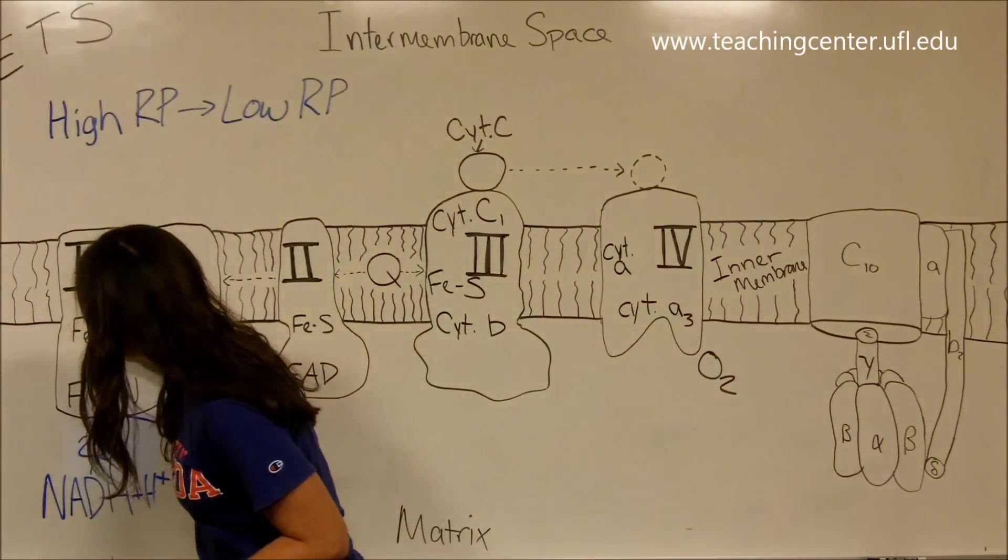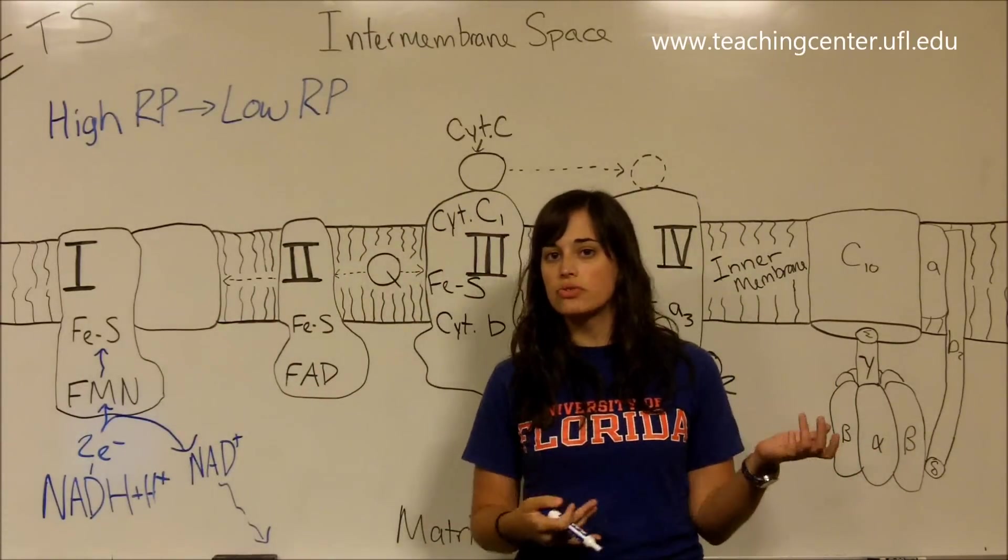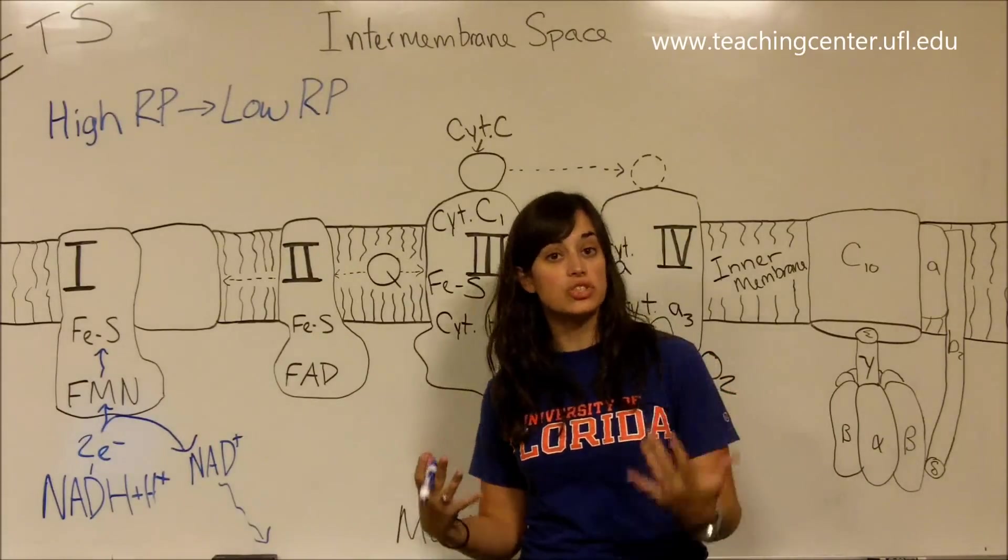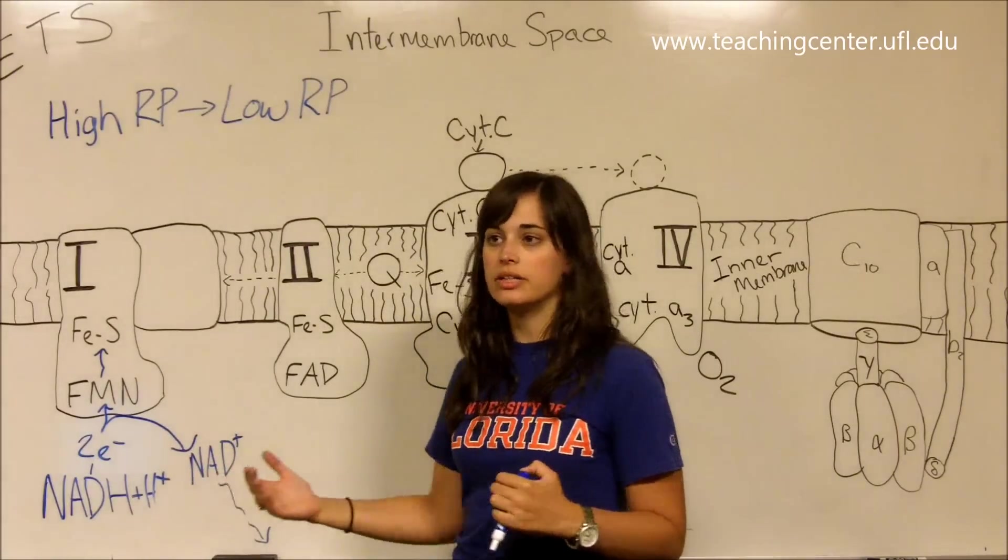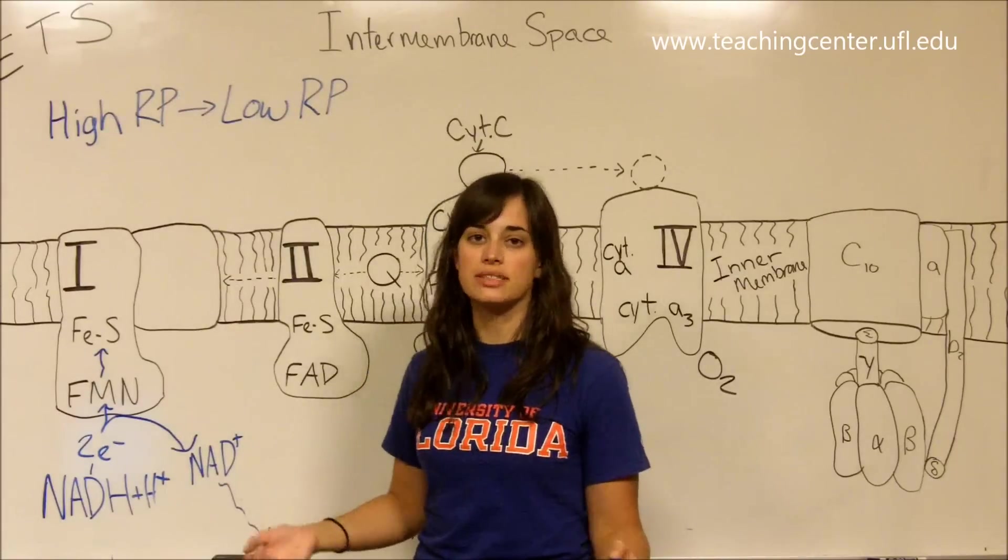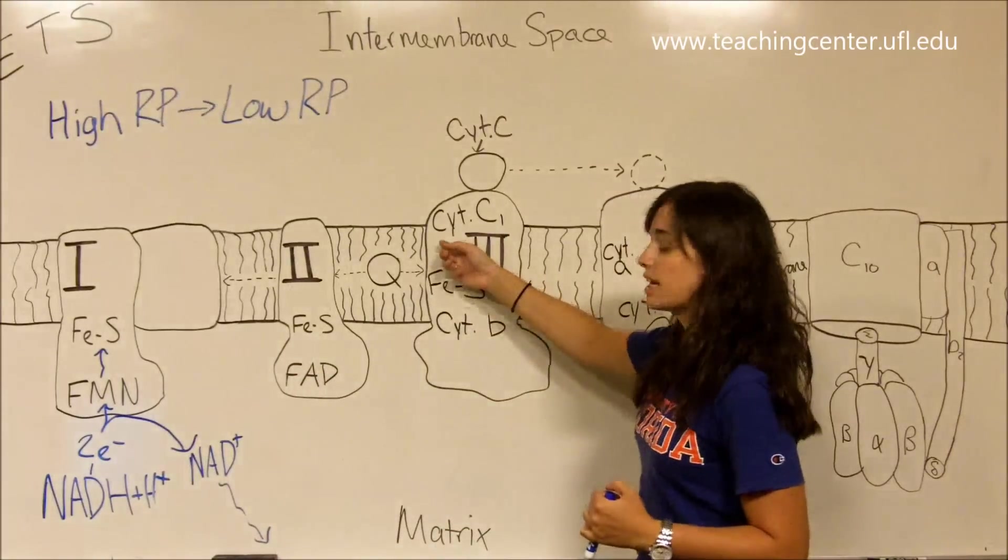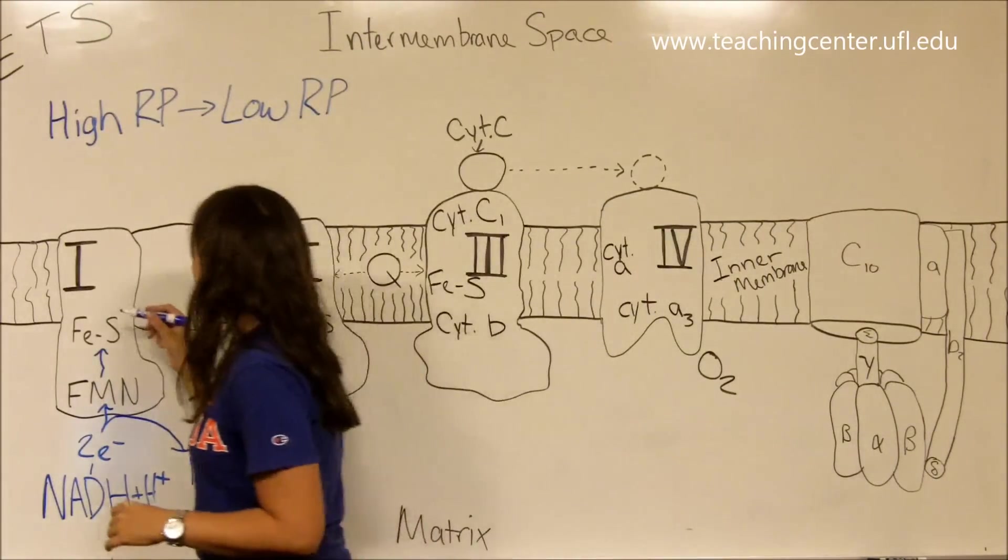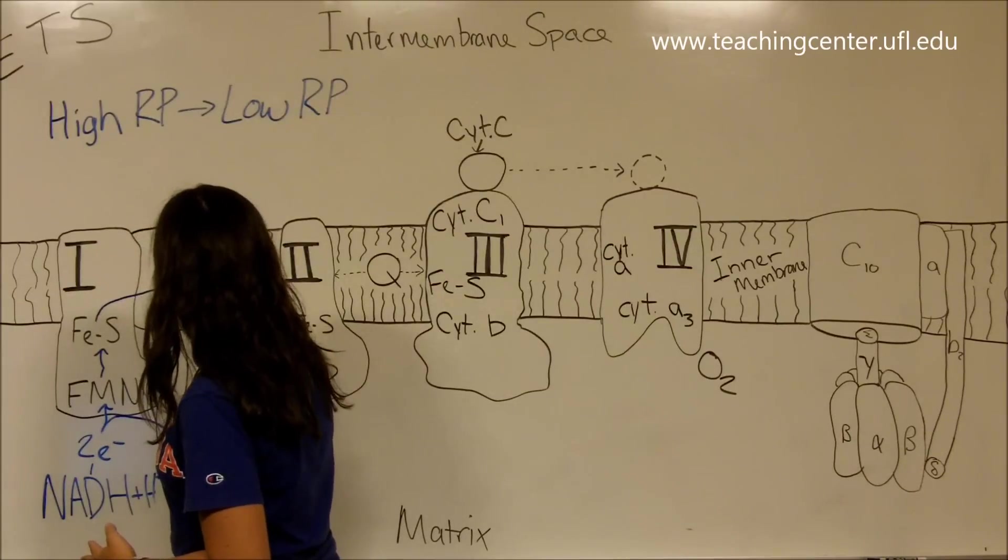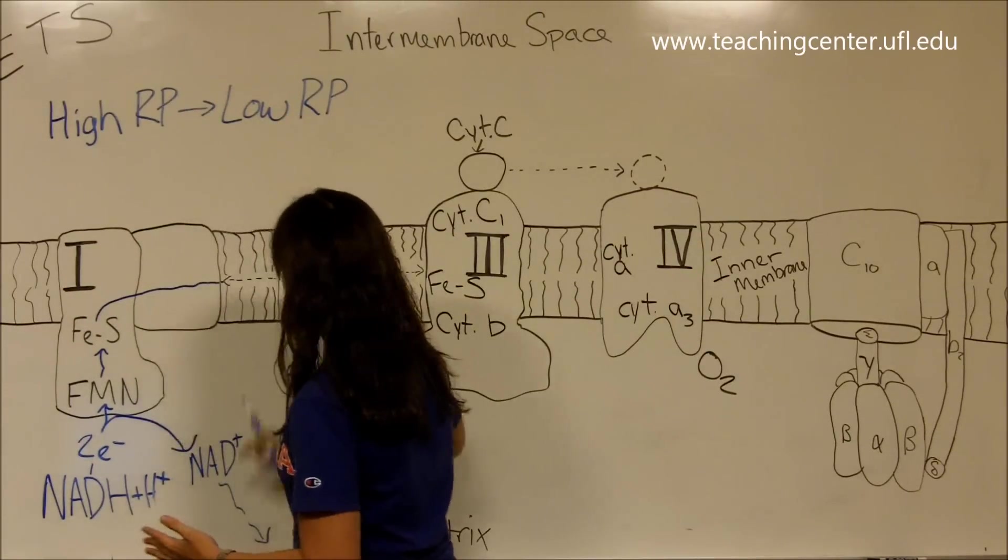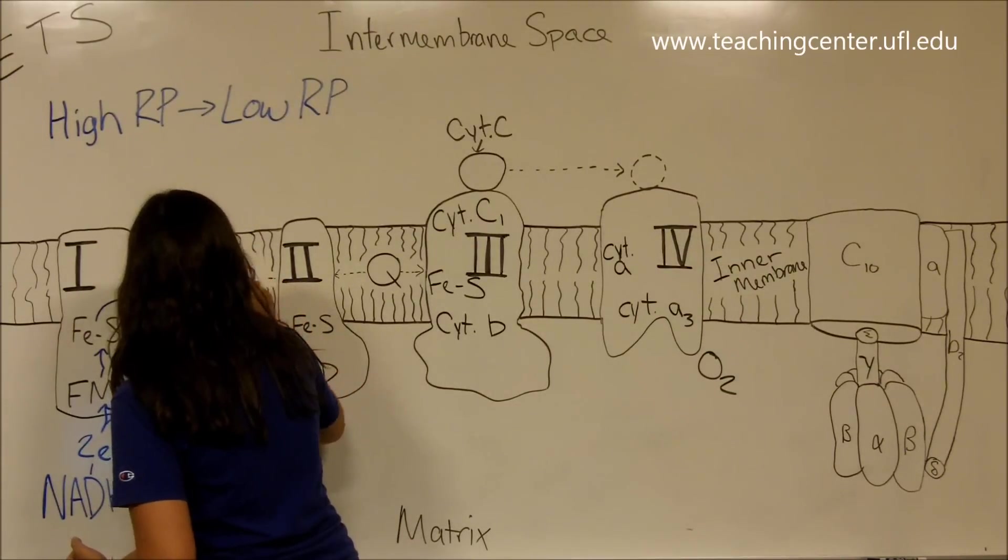These two electrons go on to FMN and they reduce FMN. Remember FMN with the isoalloxazine ring and the ribitol. Now we're going to sort of travel through complex one. Complex one also has an iron-sulfur center. As you can guess, iron-sulfur centers are things made up of iron and sulfur. They are electron carriers. Iron gets reduced from Fe3+ to Fe2+ in these centers. A lot of times you will be working with iron when you're talking about metals. You'll see iron again in your cytochromes as well.